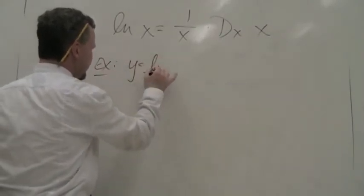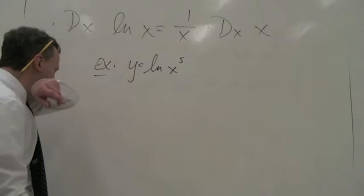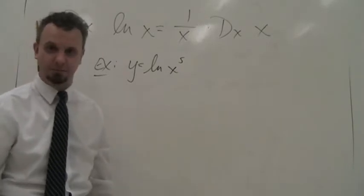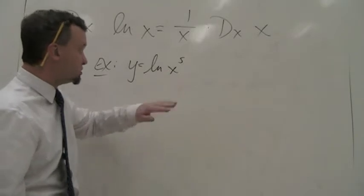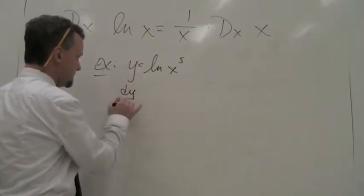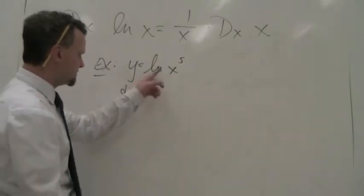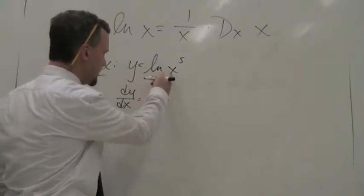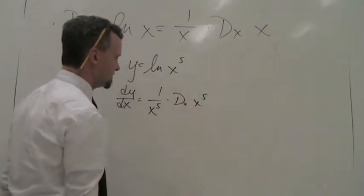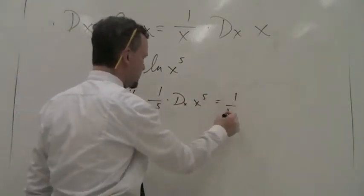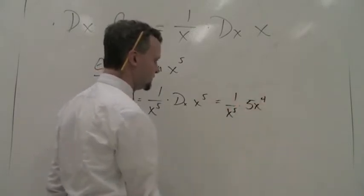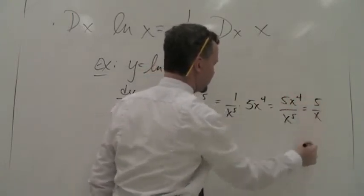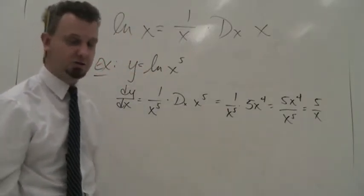Now we have y equals the natural log of x to the fifth. One way is to just use the rule directly: the derivative of ln(x⁵) is 1 over x⁵ times 5x⁴ — that's 1 over x⁵ times 5x⁴, which gives you 5x⁴ over x⁵, which simplifies to 5 over x.